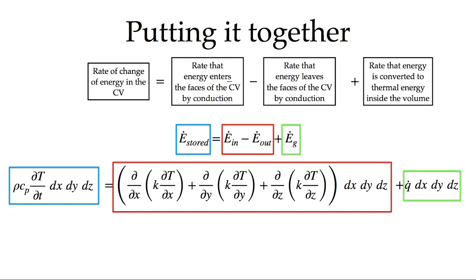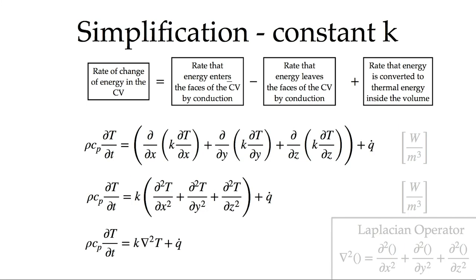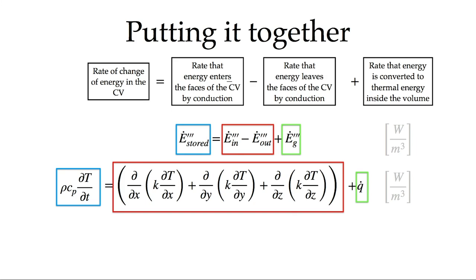Assembling the full equation: we have the rate of change of energy in the control volume (storage term), the E_in minus E_out conduction term, and the rate that energy is converted to thermal energy within the volume (generation term). Each term multiplies the volume DX·DY·DZ. Dividing through by the volume eliminates it from all terms. The generation term is now written with triple primes to indicate it is per unit volume. Each term now has units of watts per meter cubed — this is our final, complete heat diffusion equation.